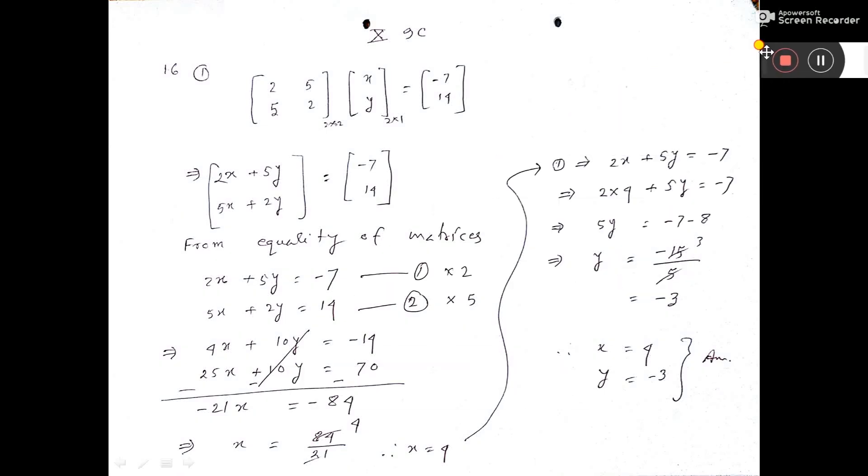Two matrices. First one order is 2 cross 2 and second one order 2 cross 1. That means this one and this one equal. So we can multiply this matrix.